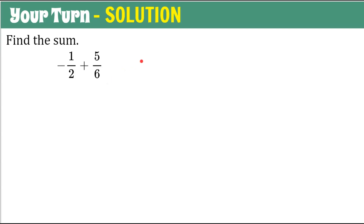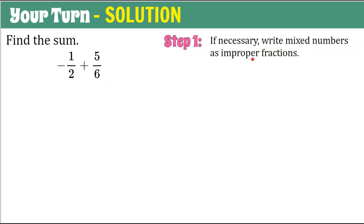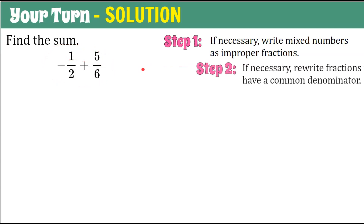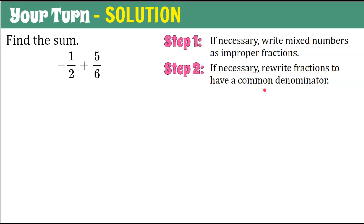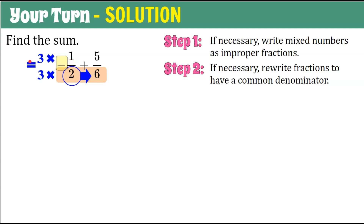Welcome back. Here's our solution. Step one: write mixed numbers as improper fractions — not necessary here. Step two: rewrite fractions to have a common denominator. We have denominators of two and six. Our common denominator is six, since two is a factor of six. We multiply by three: two times three is six, and we take the negative sign with the numerator — negative one times three is negative three over six. So negative three-sixths and five-sixths now have a common denominator.